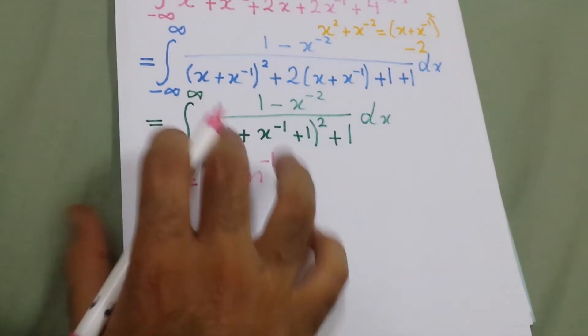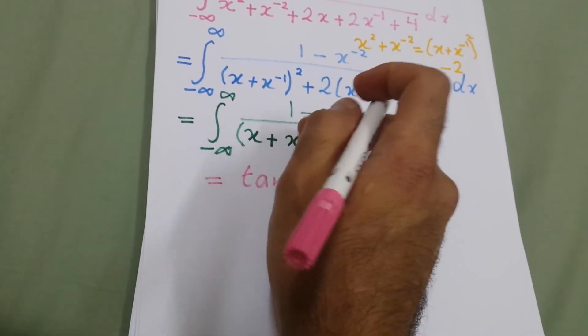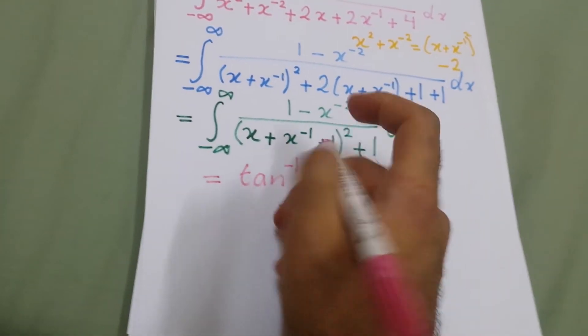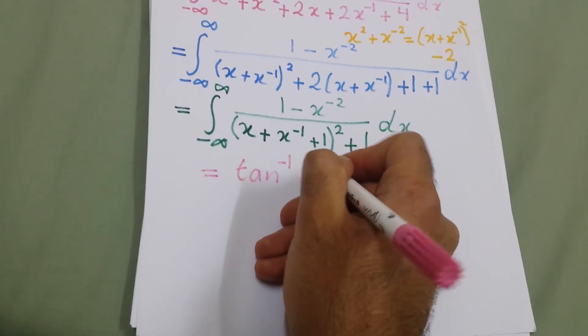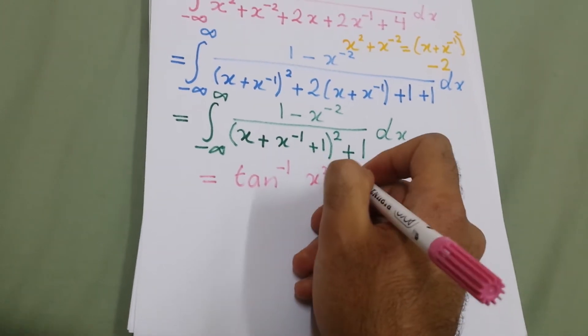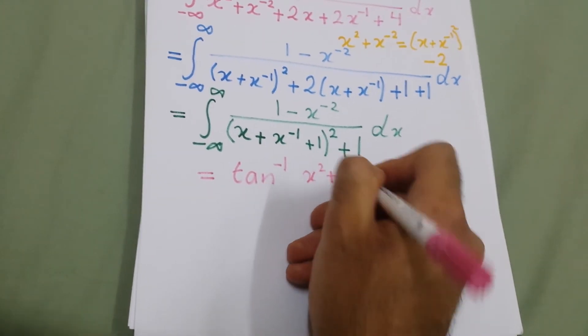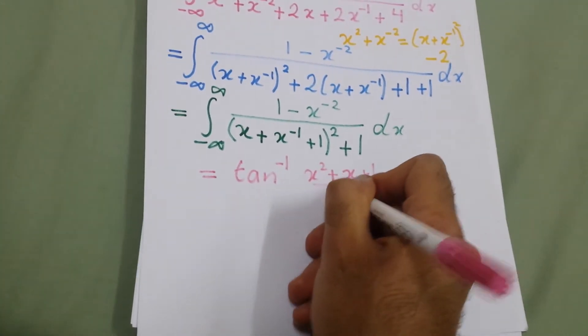So it will be tan inverse. We multiply by x and divide by x, so it becomes x squared plus 1 plus x, all over x.